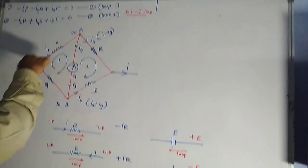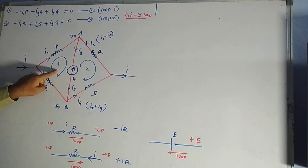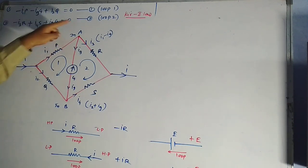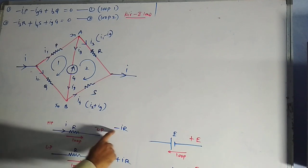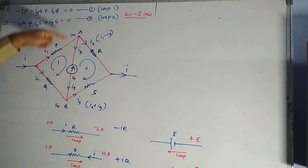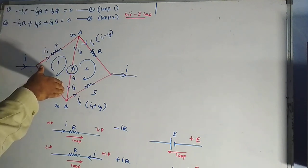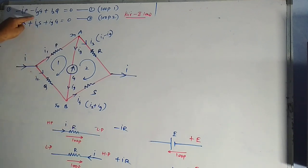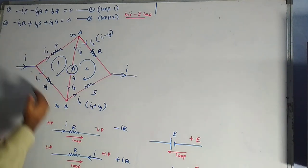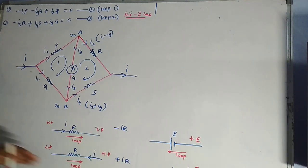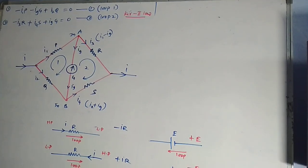In the first loop, current and loop are in the same direction, so we write minus I1 times P. The galvanometer is in the middle — current and loop are in the same direction, so minus IG times G. For the next branch, current and loop are opposite, giving a positive sign: plus I2 times Q equals zero. The galvanometer G is a very high resistance. This gives the first KVL equation for loop one.